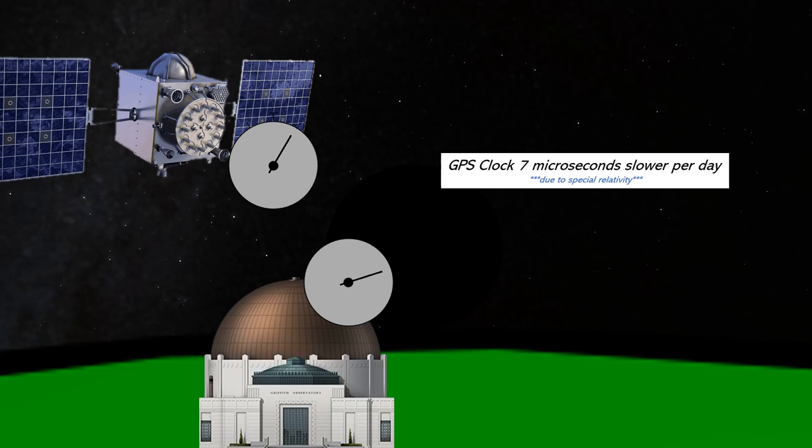It's special because we've set up a special example where two objects, the satellite and our position on Earth, are in constant relative motion to each other. The effects of acceleration, course changes, or gravity aren't considered.